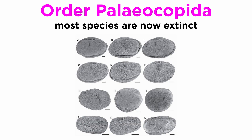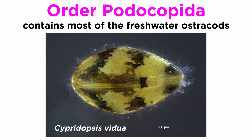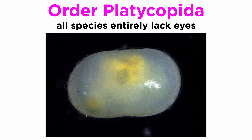Most species of order Palaiocopida are now extinct, and photos of living taxa are rare. Order Podocopida is the most diverse of all ostracod orders and includes the vast majority of freshwater ostracods, such as the common freshwater seed shrimp, Cypridopsis vidua. Finally, there is order Platycopida, which is sometimes listed as a suborder of Palaiocopida, all of which entirely lack eyes.